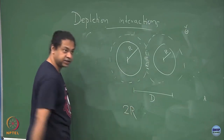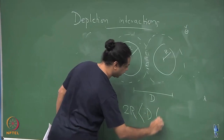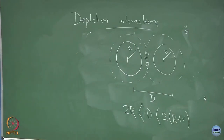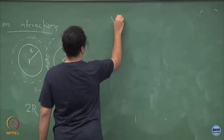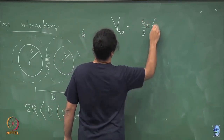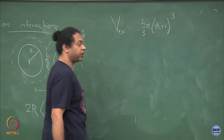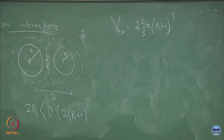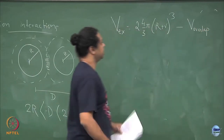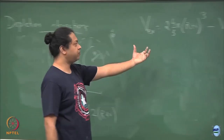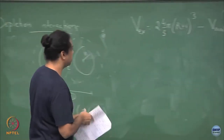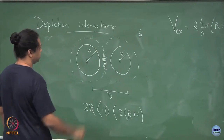There will be a force if D is larger than 2R — when the two spheres are touching — and smaller than 2R plus 2r. The excluded volume of these two large spheres is simply 2 times (4/3)π(R+r)³ minus whatever is the overlap volume. If the spheres are far apart there is no overlap volume; if they are close there will be some non-zero overlap volume.